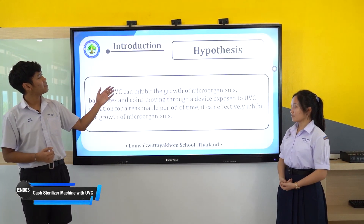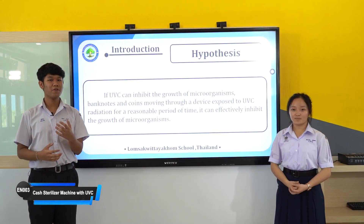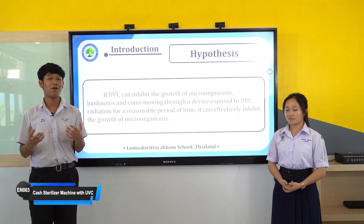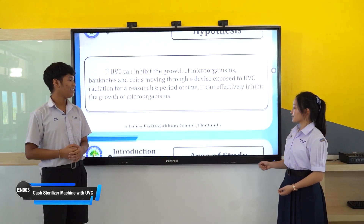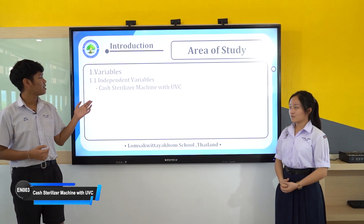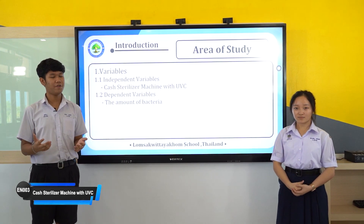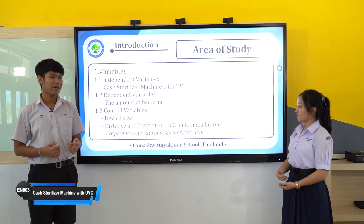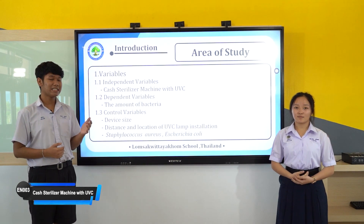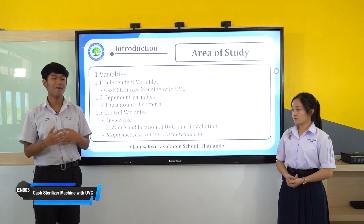The next topic is the hypothesis. If UVC can inhibit the growth of microorganisms, banknotes and coins moving through and exposed to UVC radiation for a reasonable period of time can effectively inhibit the growth of microorganisms. The variables include: the independent variable — the cash sterilizer machine with UVC; the dependent variable — the amount of bacteria; and the control variables, such as device size, distance and location of UVC lamp installation, and the type of bacteria used in the experiment.